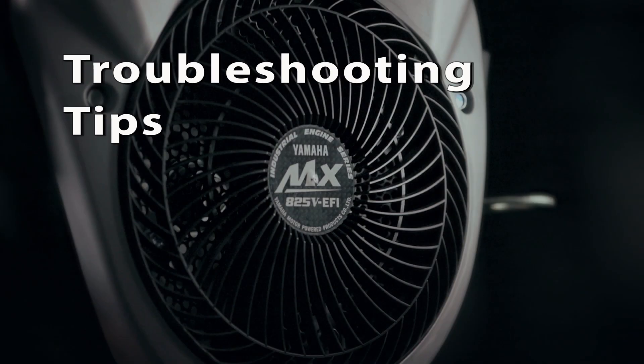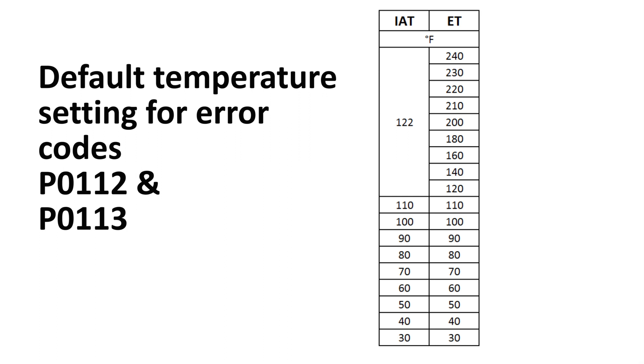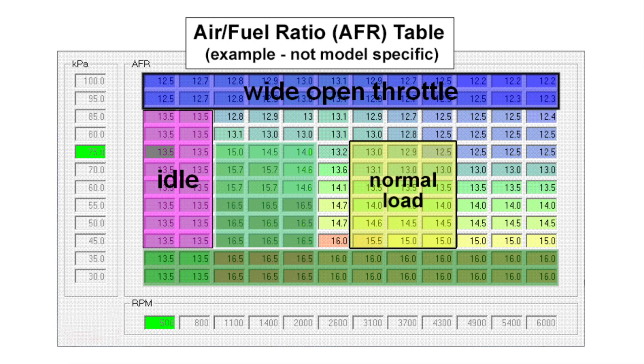If the ECU detects a failure in the intake air temperature circuit, it will switch to a default mode to allow the engine to keep running. The ECU will set the intake air temperature to match the engine temperature at that time up to a maximum of 122 degrees. For example, if the air temperature is 100 degrees and the engine was running at 160 degrees, the ECU will set the intake air to 122 if it detects a failure. Depending on the difference between the actual air temperature and the default setting of 122 degrees, engine performance could be affected when the ECU starts using the default temperature in the fuel injection calculations.